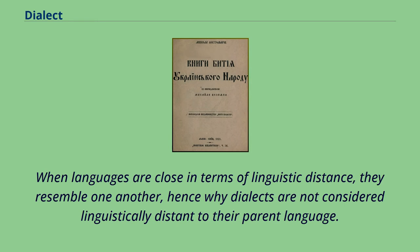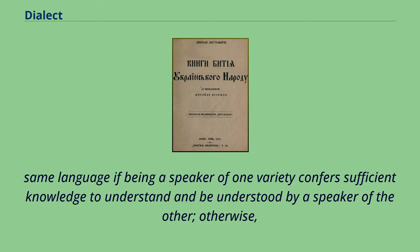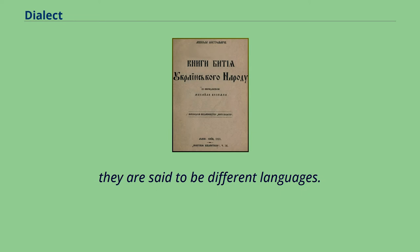When languages are close in terms of linguistic distance, they resemble one another — hence why dialects are not considered linguistically distant to their parent language. One criterion, often considered to be purely linguistic, is that of mutual intelligibility: two varieties are said to be dialects of the same language if being a speaker of one variety confers sufficient knowledge to understand and be understood by a speaker of the other; otherwise, they are said to be different languages.